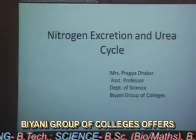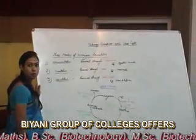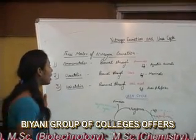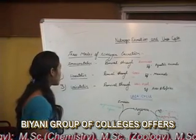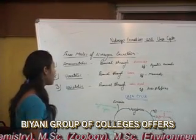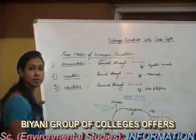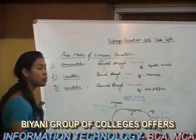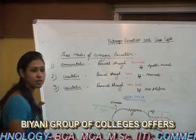Nitrogen Excretion is a process of removal of Amino Nitrogen which involves three different modes. The first is the Ammonotelic, in which the Nitrogen is removed in the form of Ammonia, found in aquatic animals. The second is Ureotelic, wherein the removal of Nitrogen takes place through Urea, found in mammals. The third is Uricotelic, where removal takes place in the form of Uric acid in case of apes and reptiles.